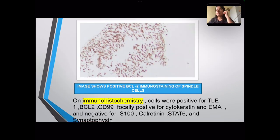Subsequently, immunohistochemistry was performed. The cells were positive for TLE1, BCL2, CD99, and focally positive for cytokeratin and epithelial membrane antigen. They were negative for S100, calretinin, STAT6, and synaptophysin. The image above shows positive BCL2 staining of the spindle cells.